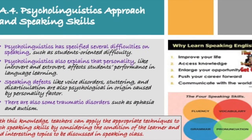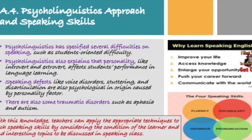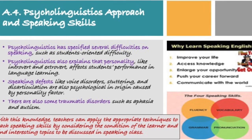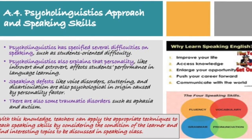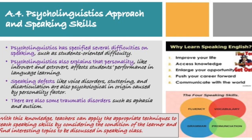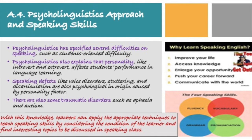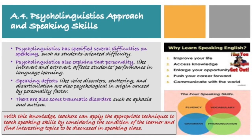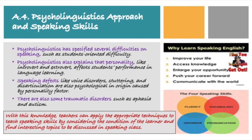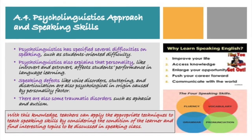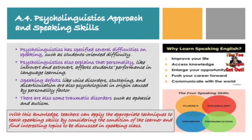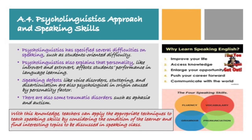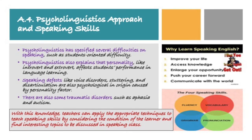Fourth, psycholinguistics approach and speaking skills. Psycholinguistics has specified several difficulties in speaking, such as student-oriented difficulty. Psycholinguistics also explains that personality traits like introvert and extrovert affect students' performance in language learning. Speaking defects like voice disorders, stuttering, and disarticulation are also psychological in origin, caused by personality factors. There are also some traumatic disorders such as aphasia and autism. With this knowledge, teachers can apply appropriate techniques to teach speaking skills by considering the condition of the learner and finding interesting topics to be discussed in speaking class.